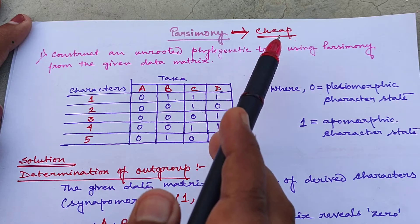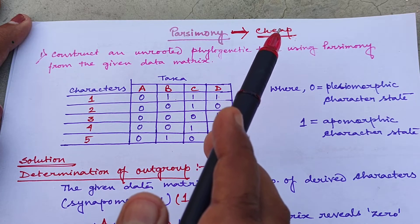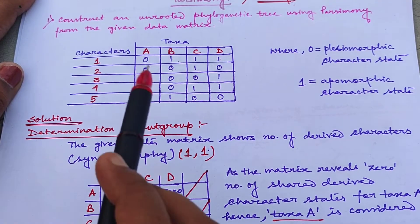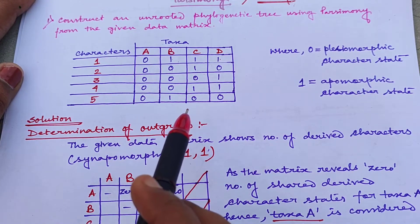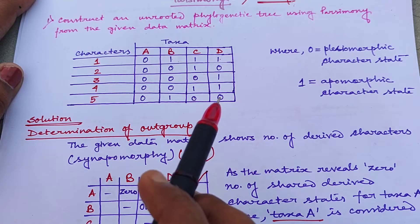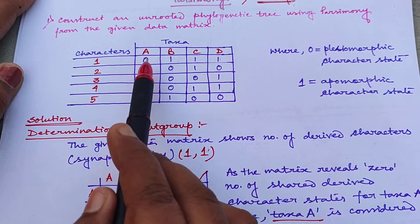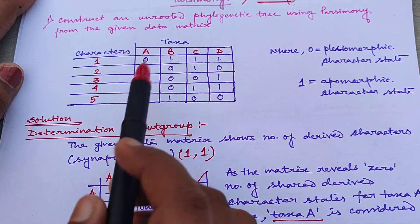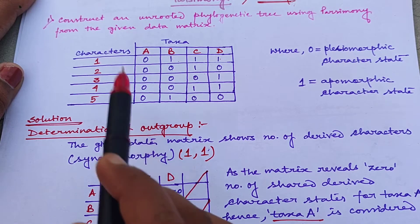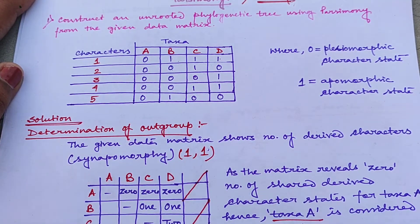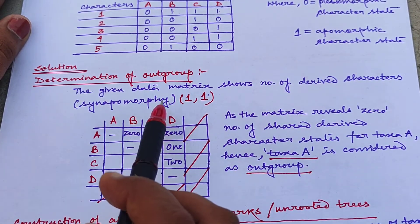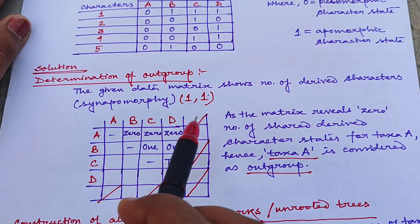First of all we have to draw all the possible unrooted trees and from that we have to select only that tree which has the least or lowest number of mutations — that tree which shows cheapness in case of mutation number or evolutionary change number. For that, first of all we have to determine the outgroup. The outgroup is that taxa which is completely different from the rest of the taxa and shares most of the ancestral character states. Based on the shared derived character states between pairs of different taxa we can construct a data matrix.